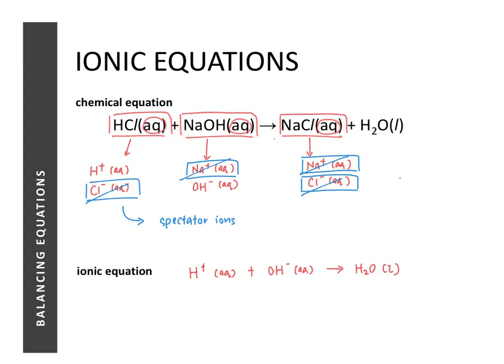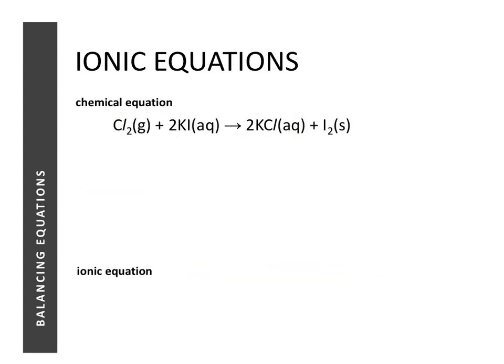The ionic equation shows only the remaining ions and substances. In this case: H⁺ (aqueous) + OH⁻ (aqueous) → H₂O (liquid). This is how we reduce a chemical equation into an ionic equation.